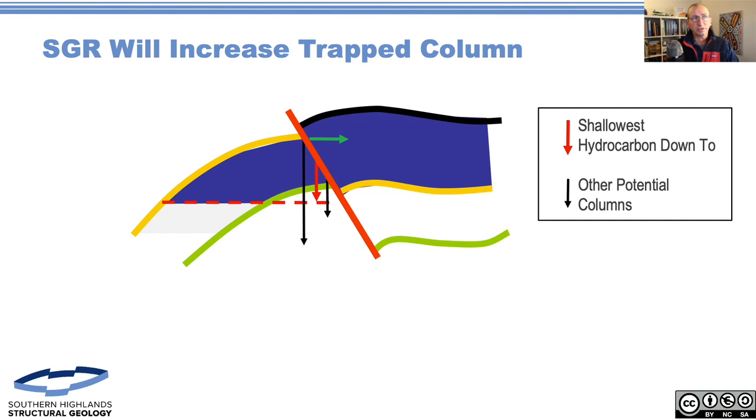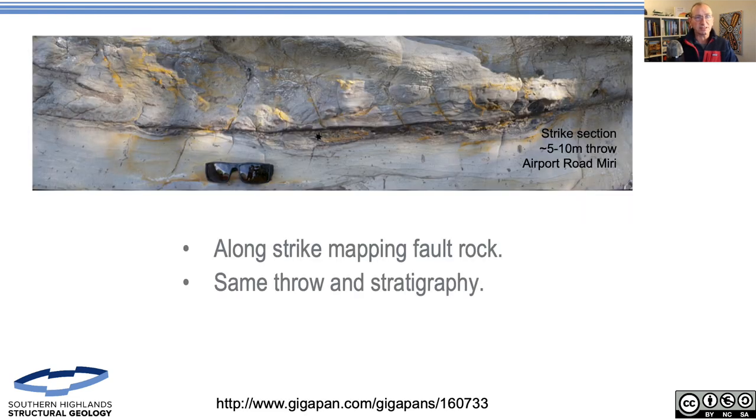Based on writing the software and starting to do field training courses and looking at these things in outcrop, one place we went to was Miri in Sarawak, north coast of Borneo. There's a famous set of outcrops on the airport road. This is a strike section along one of the faults. Normally when you look at the airport road outcrops you see a nice dip section with faults displacing. What we're looking at here is a terrace on top of the quarry.